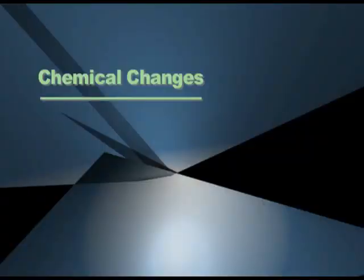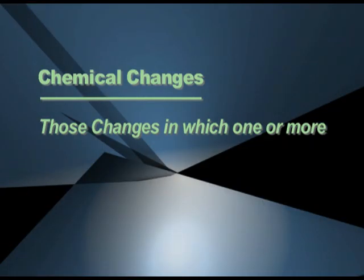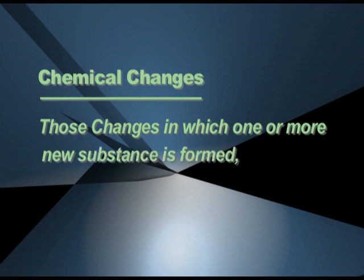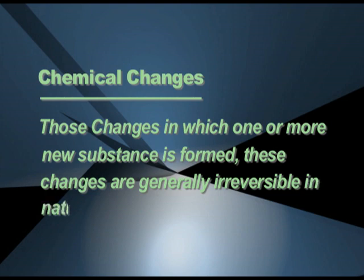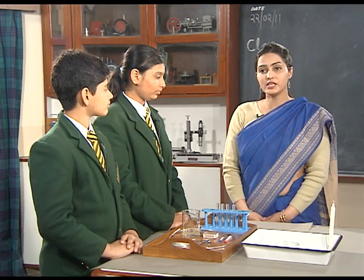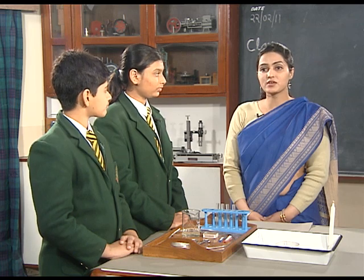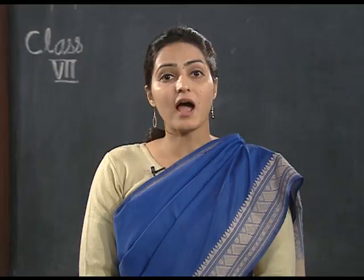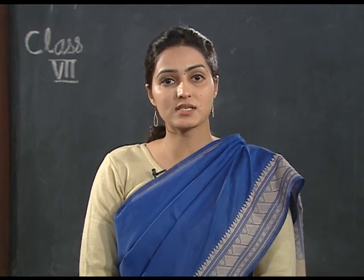First of all, we will learn about chemical changes. Chemical changes are those changes in which one or more new substances are formed, and these changes are generally irreversible in nature. For example, when we burn leaves, the leaves get converted into ash, and this ash we cannot get back into leaves. So this is an irreversible process.